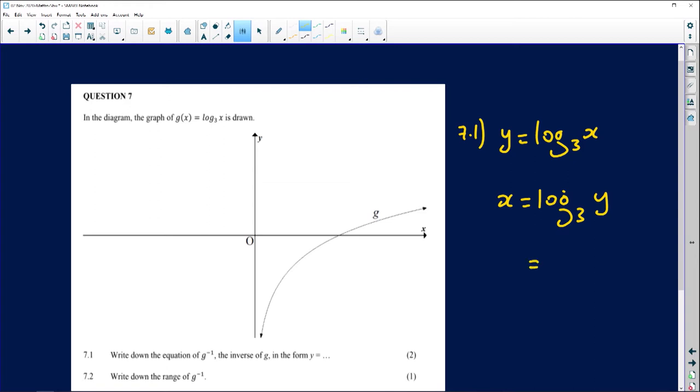So how do you unlock yourself out of a log? Well, the base of the log comes this way. It still becomes the base of the exponent, so 3 becomes 3, x goes up because it's going to be an exponent, and y remains. And there we go, I've got the equation of the inverse in the form y equals to something. So it's going to be y equals 3 to the power of x.